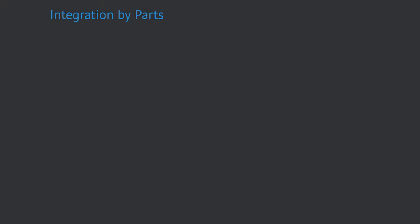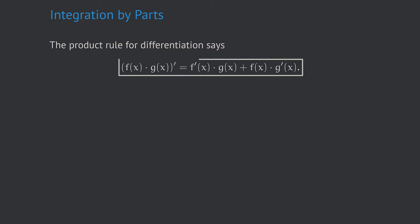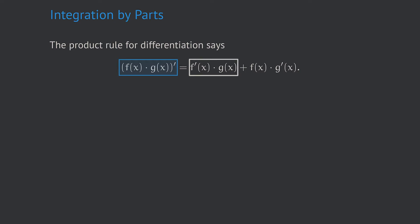Integration by parts is a special way to find antiderivatives for functions of a certain structure. As finding antiderivatives for functions is generally a hard task, it is always valuable when the function we want to integrate has this certain structure. In fact, integration by parts is built upon the product rule for differentiation. The product rule says that whenever we want to find the derivative of a product of two functions, which we call f and g, we can calculate this derivative as the derivative of f times g plus f times the derivative of g.